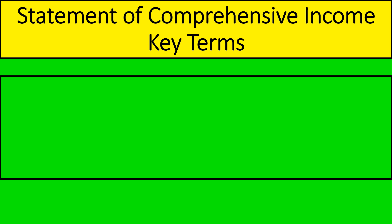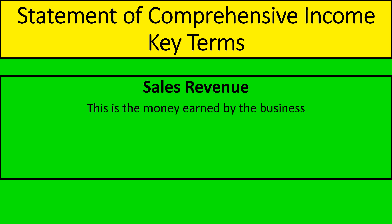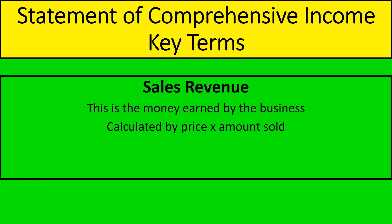The first key term you need to know is sales revenue. We've covered this before in breakeven, but again sales revenue is the money earned by the business and we calculate this by the price times the amount sold. So in a pizza company, if the pizzas cost £5 and we sold 100, our sales revenue would be £500.